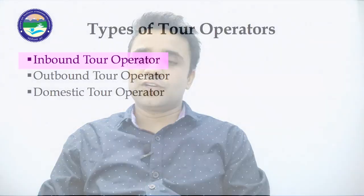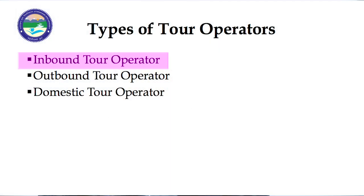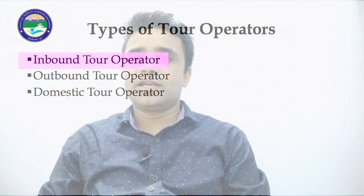Now we will understand the different types of tour operators. The first important type is the inbound tour operator. Inbound tour operators are specialized in providing tour services to foreign tourists. Foreign tourists directly contact inbound tour operators, or through their own country's tour operator, which then consults with the inbound tour operator of a specific country. They make all the basic arrangements for tourists coming from any other country.